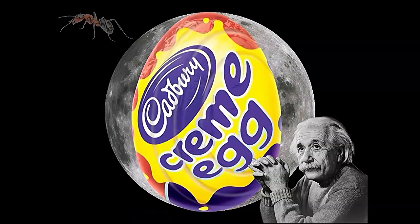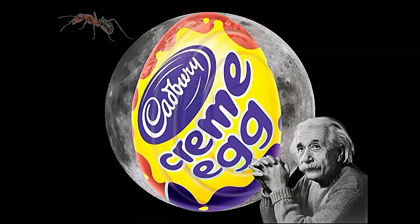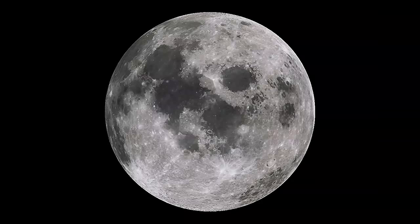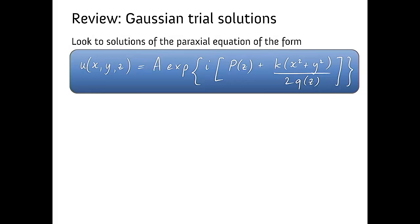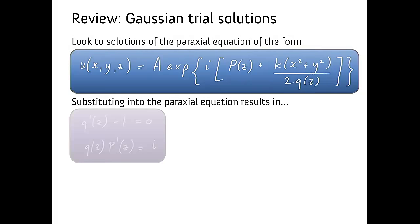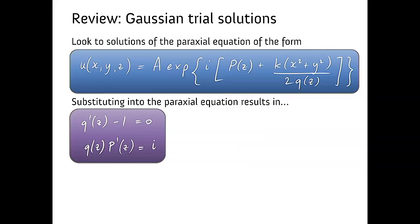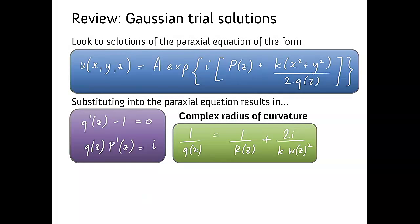All right. So we got to this point where we could write down a function Q which had a real part and imaginary part. We decided to write it in a funny way which was to say instead of writing the real part and imaginary part as A plus IB, we're going to write it as the reciprocal of Q is equal to the reciprocal of some real part plus some function which depends on the waist.